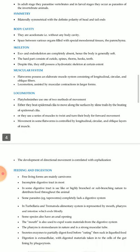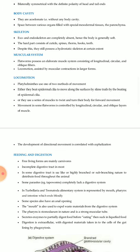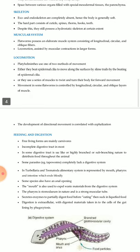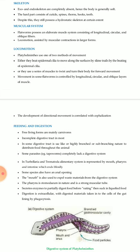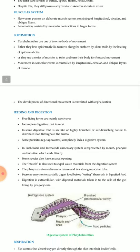Symmetry: they are bilaterally symmetrical with definite polarity of head and tail ends. Body cavity: they are acoelomate — without any body cavity; space between organs is filled with special mesodermal tissue, the parenchyma. Skeleton: exo- and endoskeleton are completely absent, so the body is generally soft. Hard parts consist of cuticles, spines, thorns, hooks, and teeth; despite this they also possess a hydrostatic skeleton to some extent.